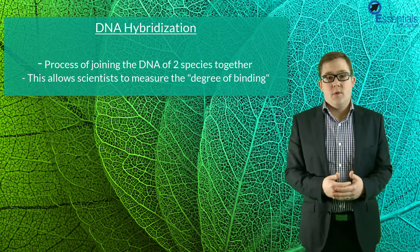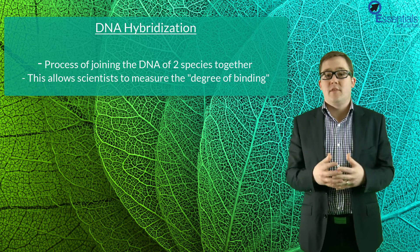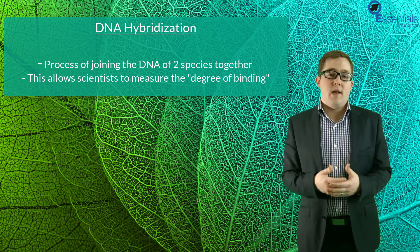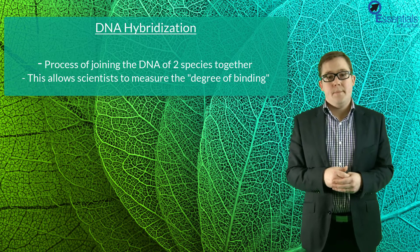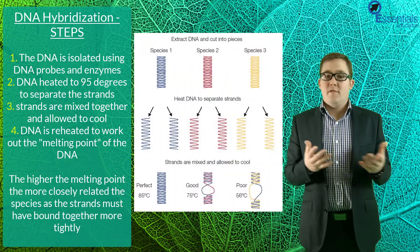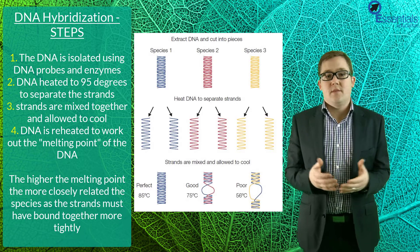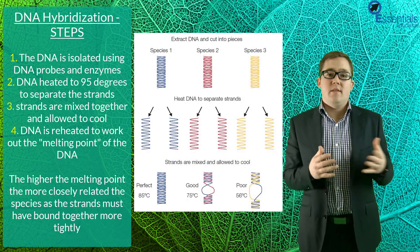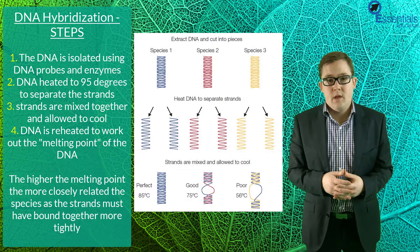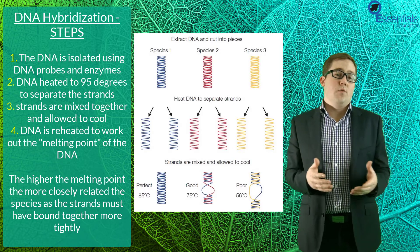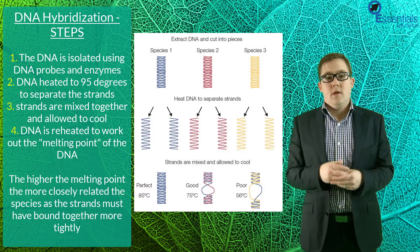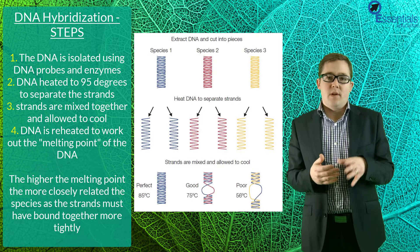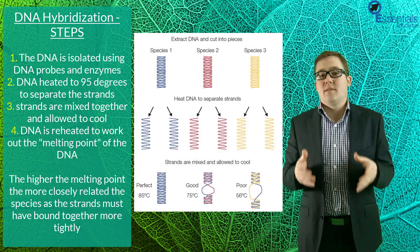Let's now take a look at DNA hybridisation, which is a process that physically joins together the DNA from two different species and sees how well they join. The degree of binding gives a good indication of how similar the strands are, and therefore how closely related the two species are. The steps are as follows: First, the particular gene sequence to be compared between the two species is isolated using gene probes and enzymes. Second, the DNA of both species is heated to 95 degrees to separate the strands. Third, the strands are mixed together and allowed to cool, enabling hybrid DNA to form. Fourth, the strands are reheated to work out the melting point of the hybrid DNA. The melting point is defined as the temperature at which 50% of the DNA is single-stranded and 50% is double-stranded.